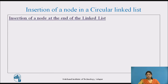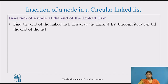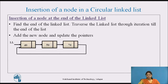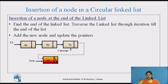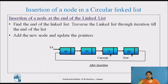Let's see insertion of a node at the end of the linked list. We need to traverse the linked list through iteration until we reach the end. Once at the end, we add the new node and update the pointers. In the example, after traversing to the last node, the next part of the current node is assigned to the new node, and the next of the new node is assigned to the head node, completing the insertion at the last place.